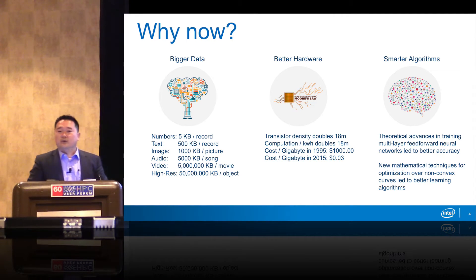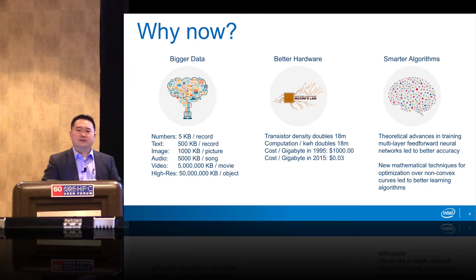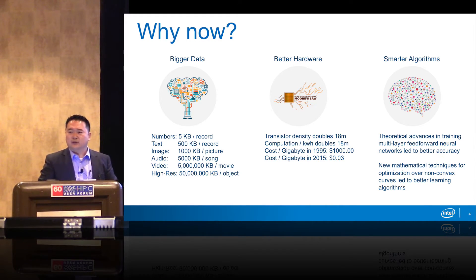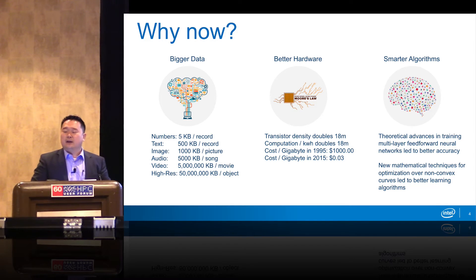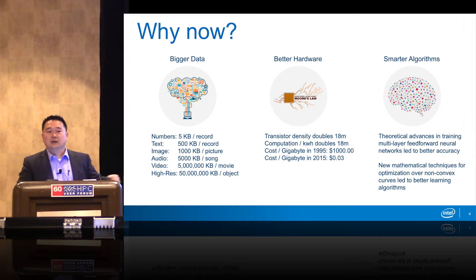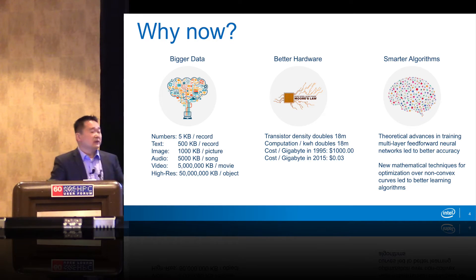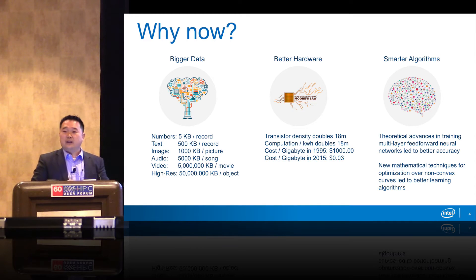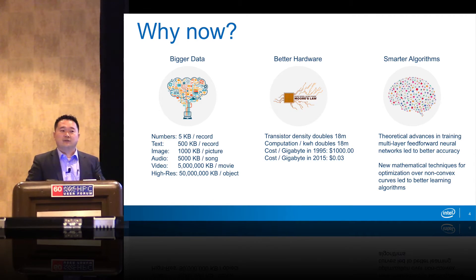And third, smarter algorithms. At Supercomputing this year, there are going to be at least 10 startups introducing their algorithms around big data and data analytics. There are quite a few theoretical advances in training and new mathematical techniques that keep developing. This convergence of bigger data, better hardware, and smarter algorithms really is a great development for the whole industry.